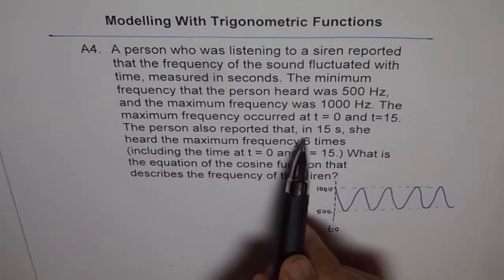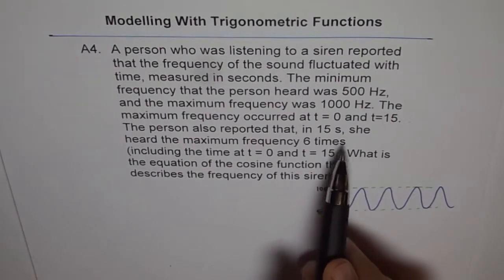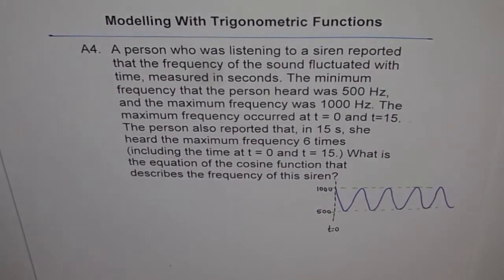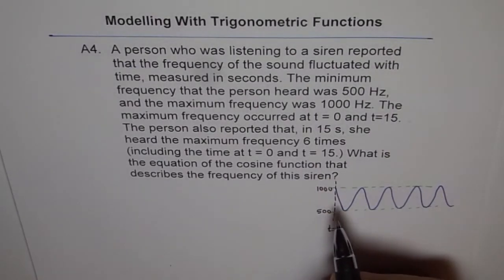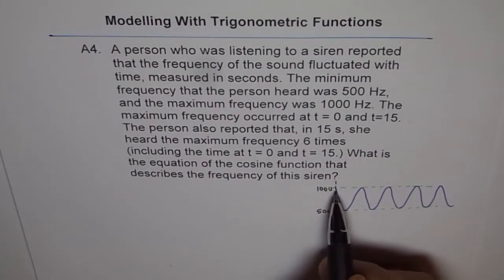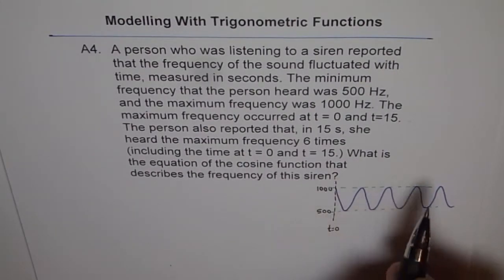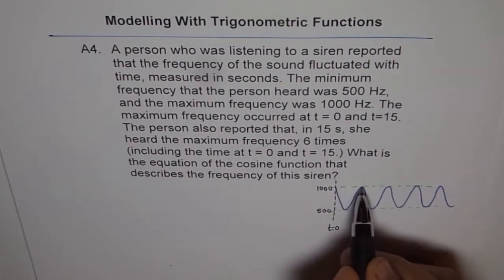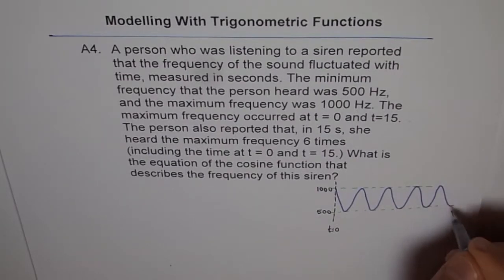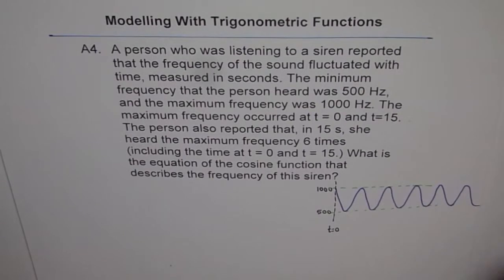The person also reported that in 15 seconds, so that means total of 15 seconds, she heard maximum frequency 6 times. So when you hear 6 times the maximum and starting with maximum, how many waves are there? I have seen students making this mistake. They will figure out as 6, right? But let's really check. 6 times maximum occurs in 15 seconds. So maximum starting with maximum, t equals 0 and 15 included. So 1, 2, 3, 4, 5, one more time. So I need to extend my wave and say well this is it.